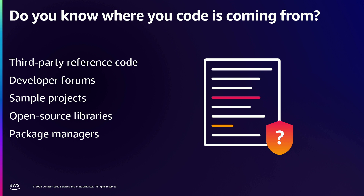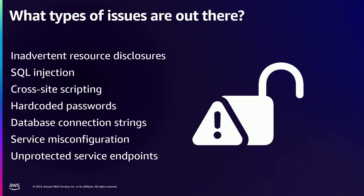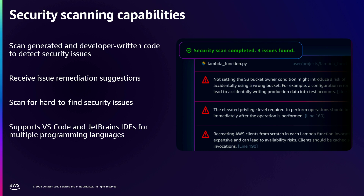Developer code comes from third-party reference code, developer forums, copy-paste from Stack Overflow — that happens all the time. Because of that, it's important to have continuous scanning for security of your code, and also an option to scan your whole code base for any security vulnerabilities. The types of issues we discover with Amazon Q include standard static security analysis for things like SQL injection, cross-site scripting, hard-coded passwords, issues in your infrastructure code, database connection strings that contain credentials, issues in your IaC code, and standard code quality issues. This significantly shifts left to developers so they can fix issues before they commit.